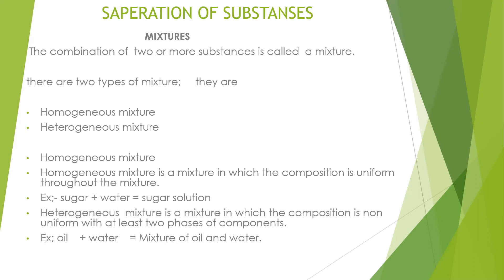A heterogeneous mixture is a mixture in which the composition is non-uniform, with at least two phases of components. Examples: oil plus water, and sand plus water. The mixture of sand and water and the mixture of oil and water are known as heterogeneous mixtures.